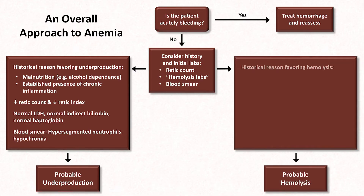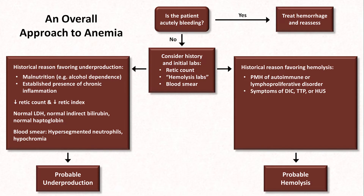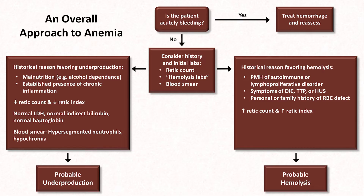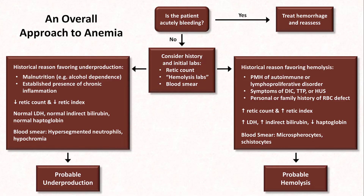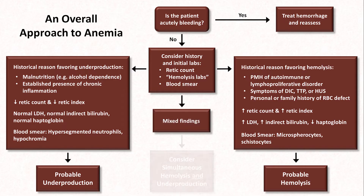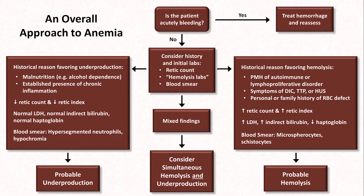Hemolysis will be favored by a historical reason for it, including a past medical history of autoimmune or lymphoproliferative disorder, symptoms of disseminated intravascular coagulation, thrombotic thrombocytopenic purpura, or hemolytic uremic syndrome, a personal or family history of an inherited RBC defect, a relatively high RETIC count or index, the combination of high LDH, high indirect bilirubin, and low haptoglobin, and/or a blood smear showing microspherocytes or schistocytes. If the patient has history and findings that span both sides of this dichotomy, consider whether they could have both general processes occurring simultaneously.